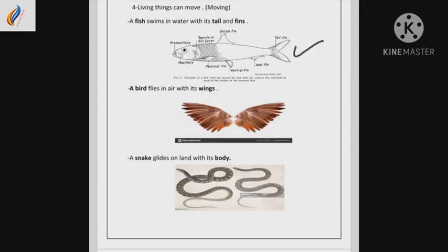Look at the first picture. It's a fish. A fish swims in water with its tail and fins. Swims means يسبح in water with its tail. Tail is a part of an animal's body sticking out from the base of the back. And fins means what? It's a thin flat part on a fish that helps it to swim.